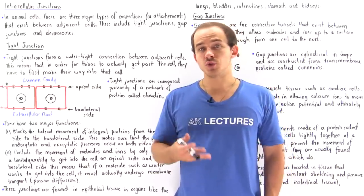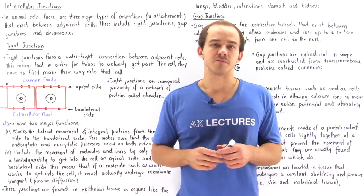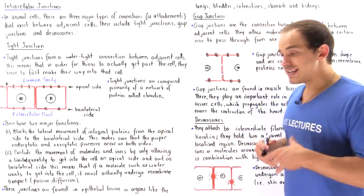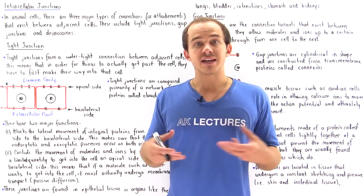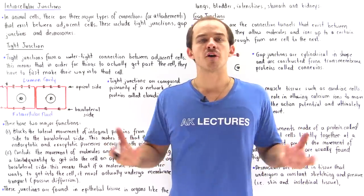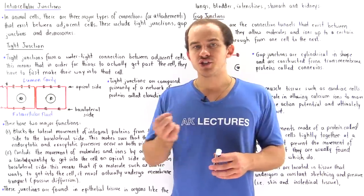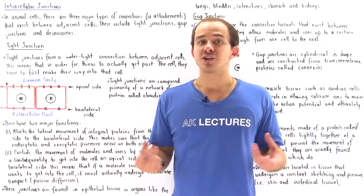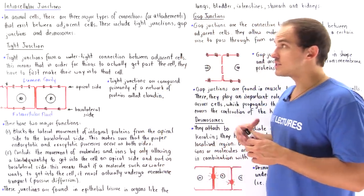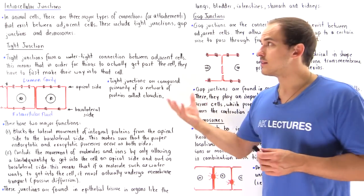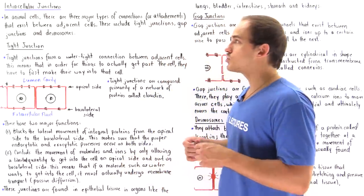Thus far in our discussion on eukaryotic cells, we discussed single eukaryotic animal and plant cells. Now the question is, in animals we usually have multicellular structures, so our cells basically combine to form multicellular organisms. In this lecture, we're going to focus on how eukaryotic animal cells connect to one another — intracellular junctions or intracellular connections, also known as cell junctions.